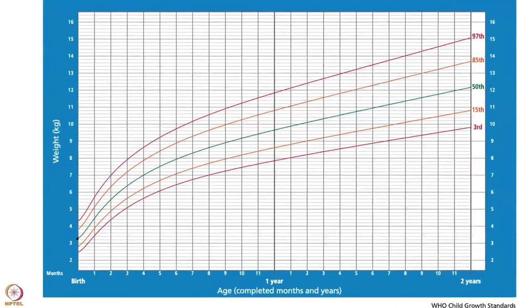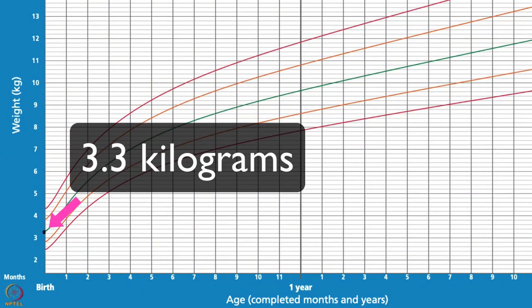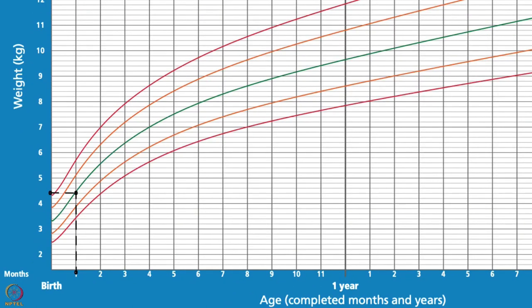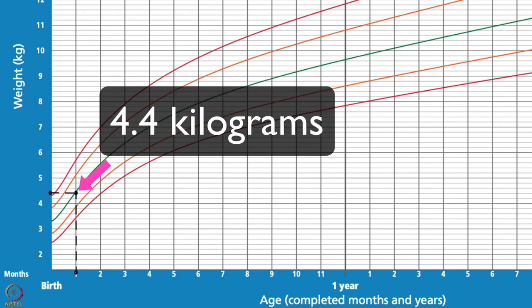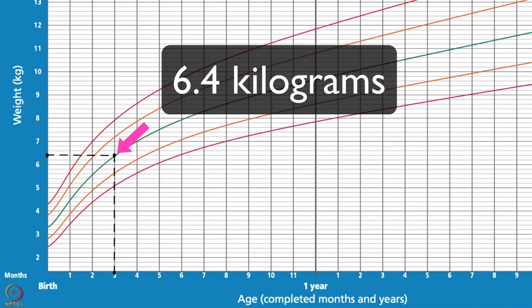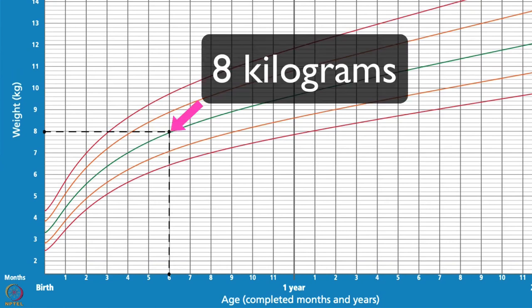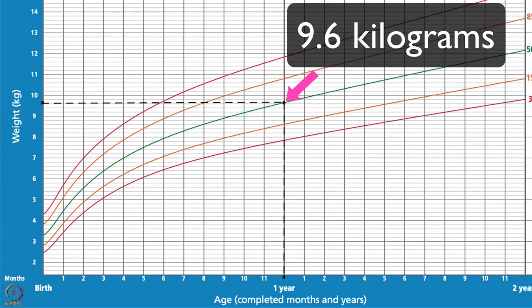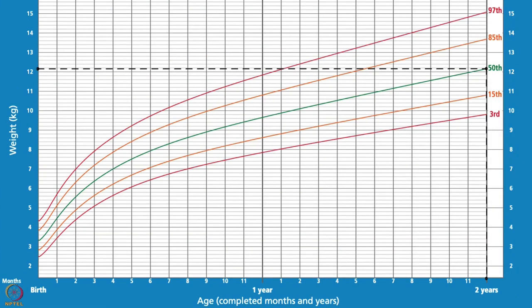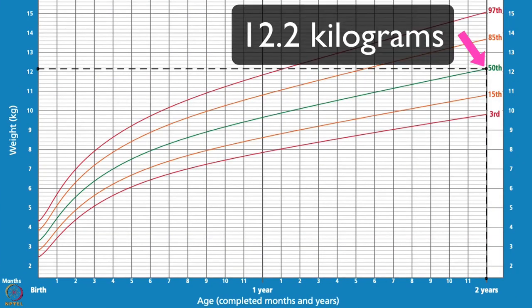The average birth weight of a boy is 3.3 kgs. At 1 month, a boy's average weight is 4.4 kgs. At 3 months, it is 6.4 kgs. The average weight of a 6-month-old boy is 8 kgs. At 1 year, it is 9.6 kgs. At 2 years, it is 12.2 kgs.